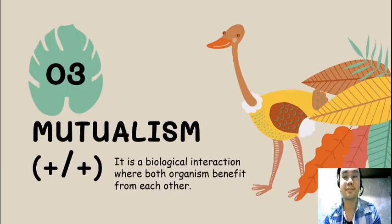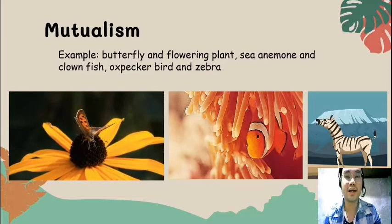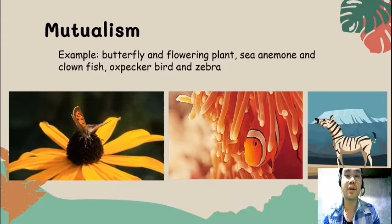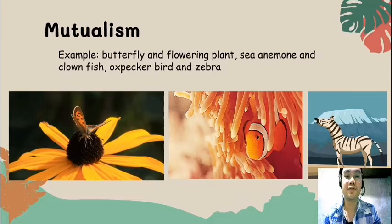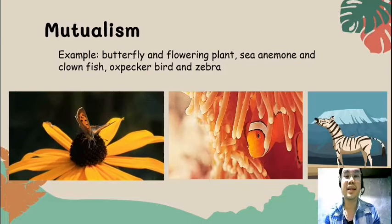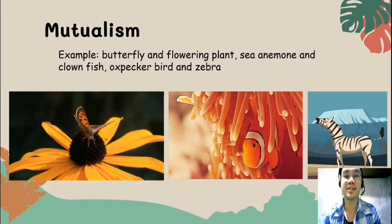The third type of ecological relationship is what we call mutualism. Mutualism is a biological interaction where both organisms benefit from one another. Since both of them benefit, the sign we use here is both positive. An example is butterfly and flowering plants, wherein the butterflies and other insects help the flower to pollinate and reproduce, while the butterfly gets its food from the flower. Another example is the clownfish and the sea anemone: the clownfish hides and uses the sea anemone as its shelter, while the sea anemone gets its food from the waste excreted by the clownfish, and the clownfish also helps protect the sea anemone from other fishes.